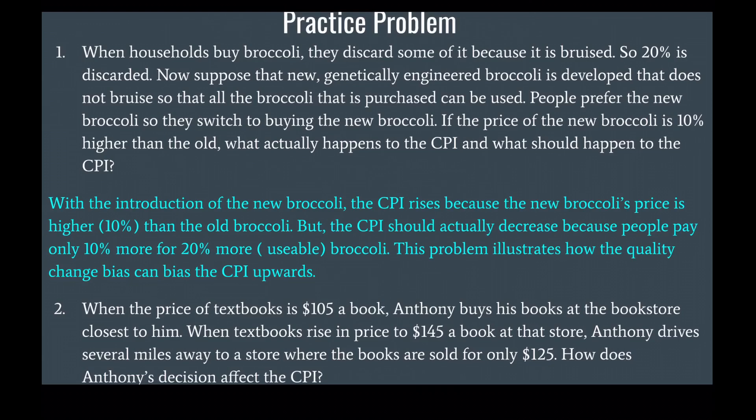With the introduction of the new broccoli, the CPI rises because the new broccoli's price is 10% higher than the old broccoli. But the CPI should actually decrease because people pay only 10% more for 20% more usable broccoli. This problem illustrates how the quality change bias can bias the CPI upwards.